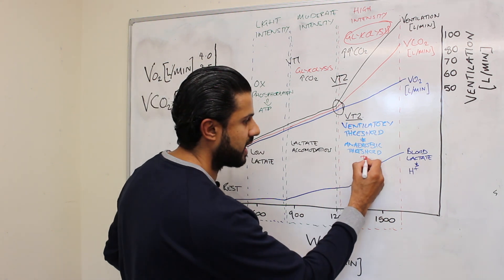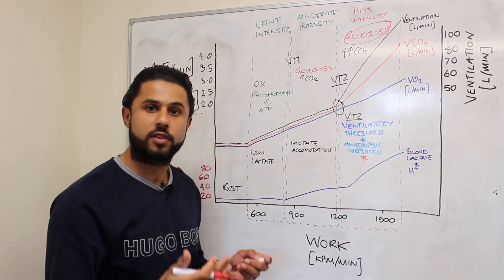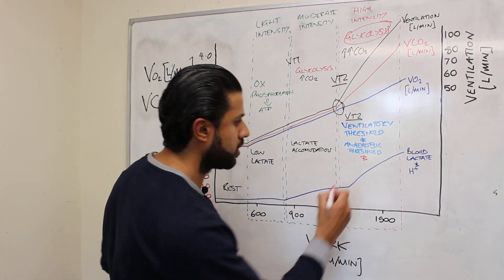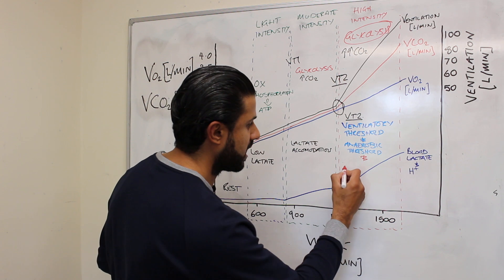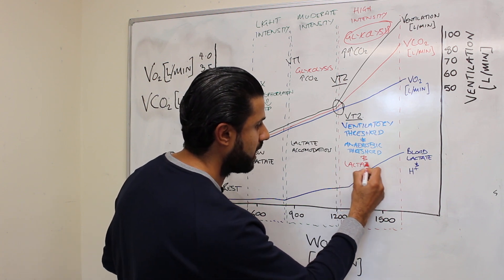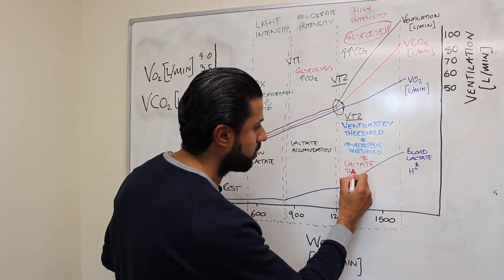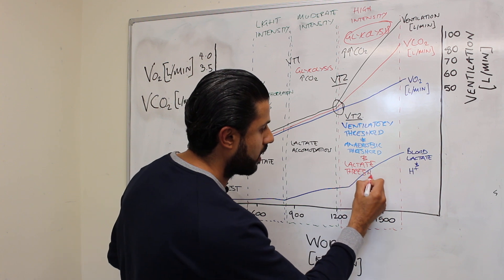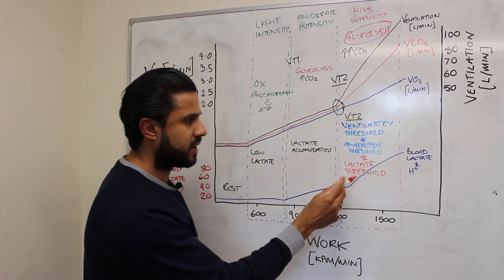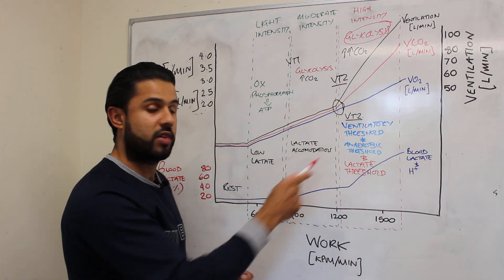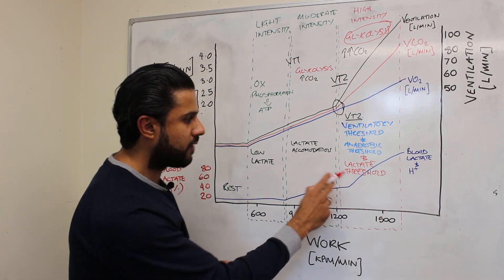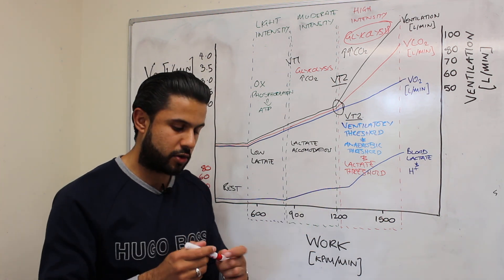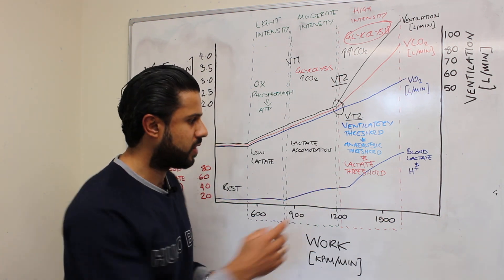Now we also have another term that you'll see in textbooks or you'll see coaches or athletes or people in the gym mention or an athletics track is the lactate threshold. Now the lactate threshold is also used interchangeably with ventilatory threshold or anaerobic threshold.